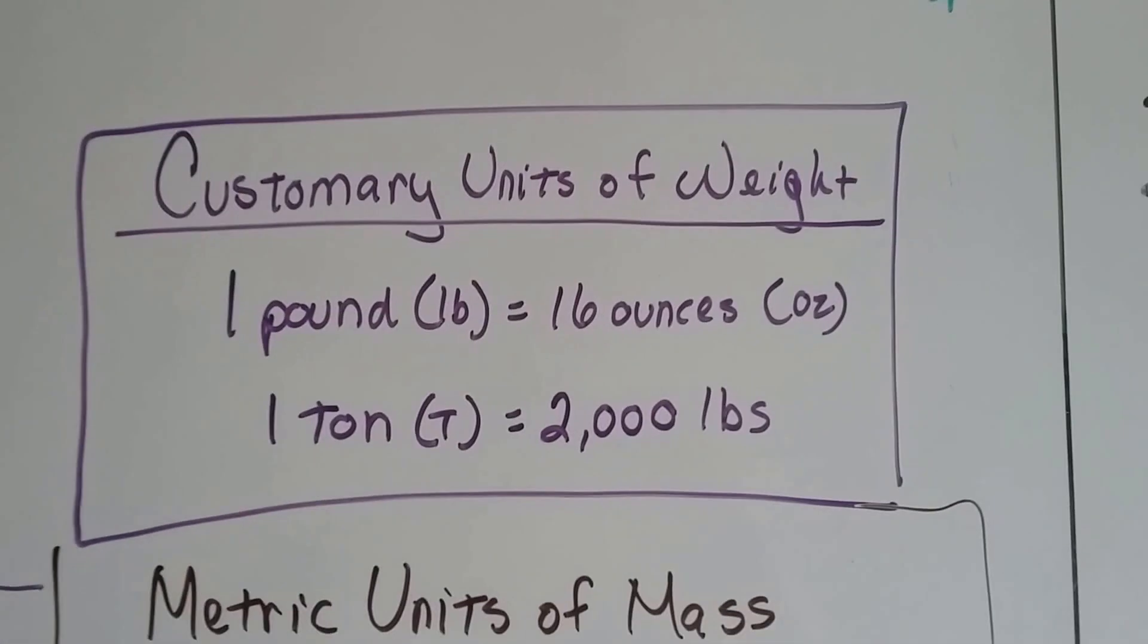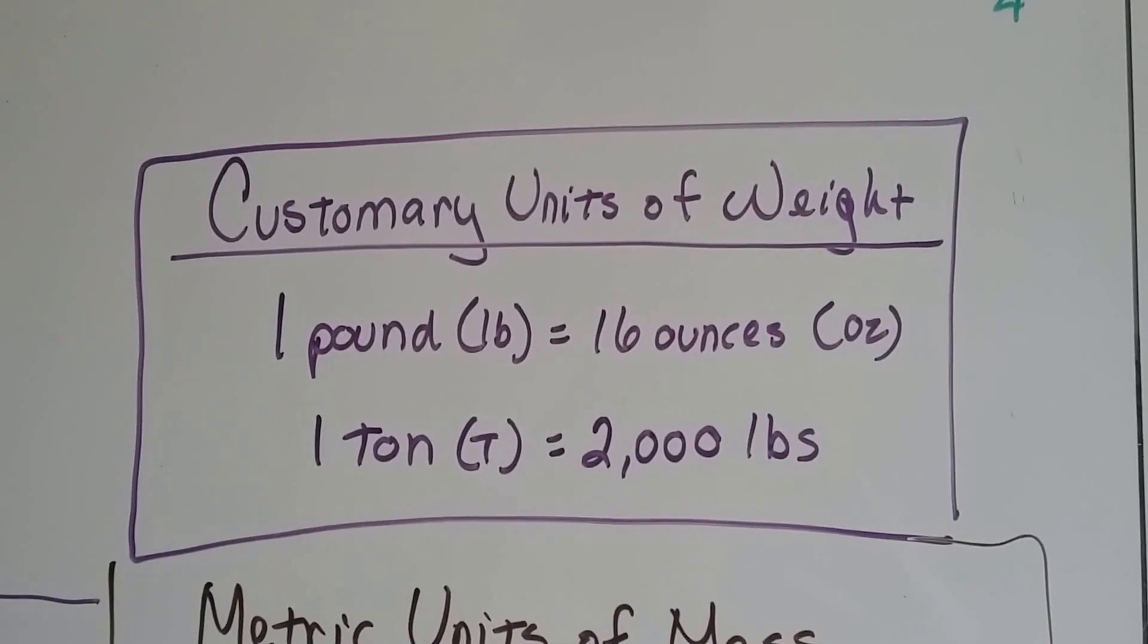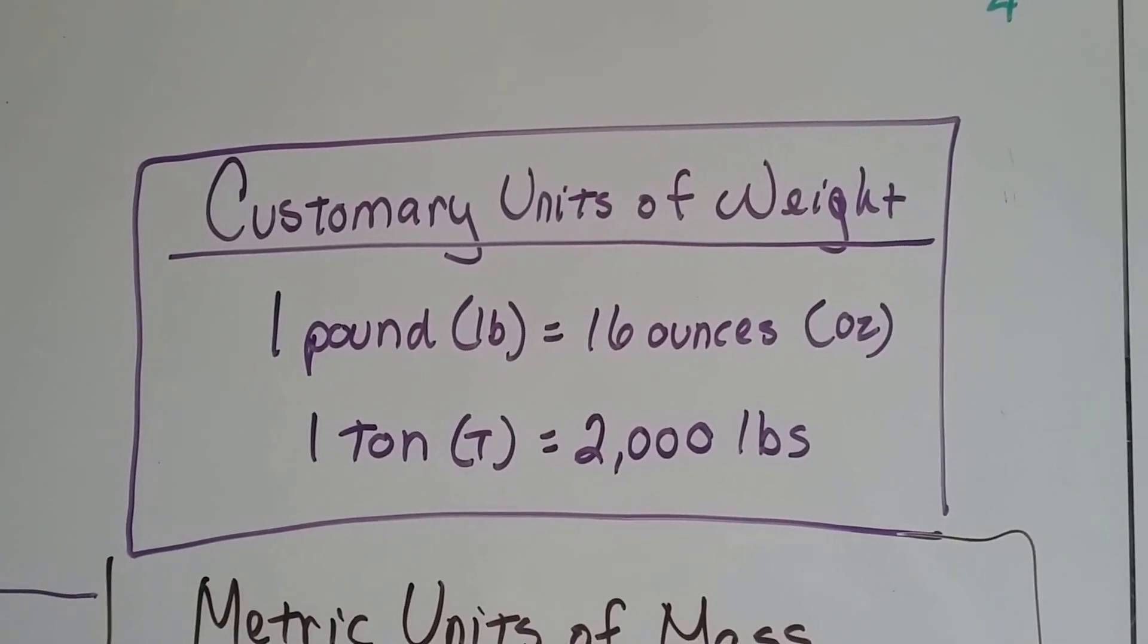For customary units of weight, here in the US, one pound is equal to 16 ounces. This is dry weight, like a pound of flour. And one ton is 2,000 pounds.